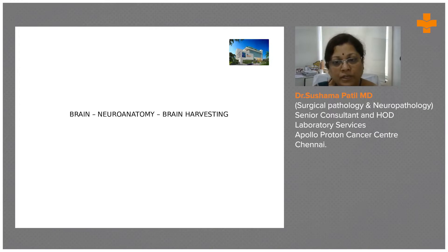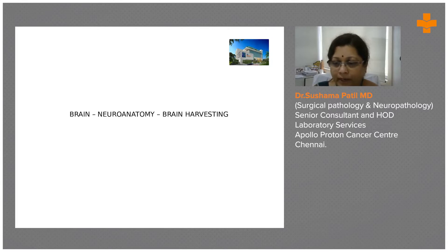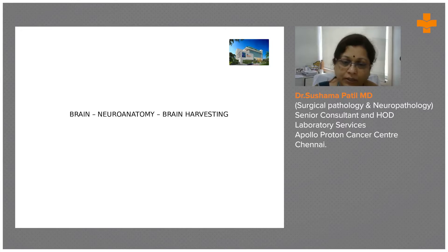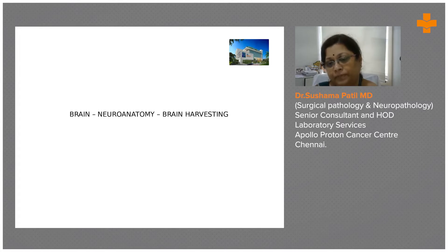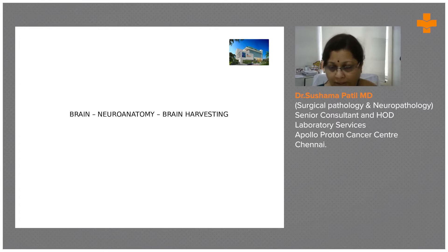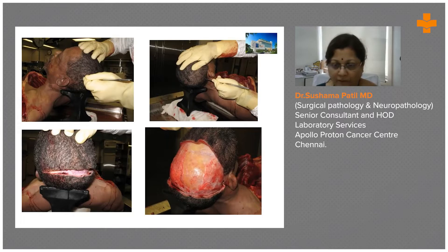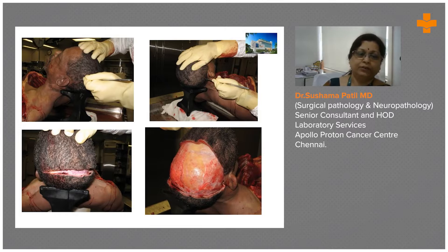Neuroimaging has advanced so much that surgeons are now able to reach different corners of the brain and resect tumors. Traditionally, neuropathology was mainly neuro autopsy, and from there we have learned a lot. You need to know the different parts of the brain before we can understand neuropathology and the tumors.